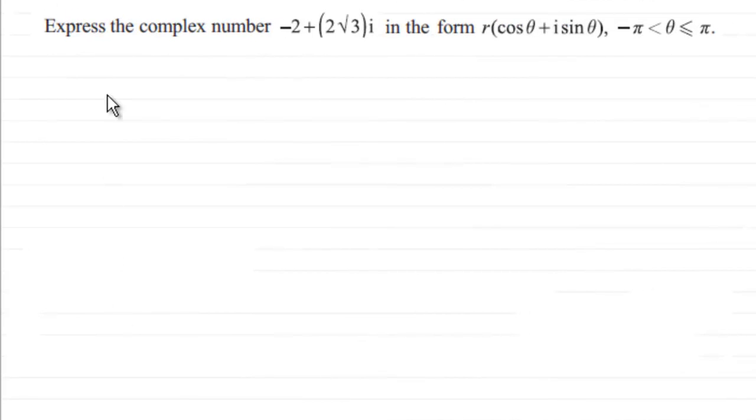Hi, now in this question we're asked to express the complex number -2 + 2√3i in the form r(cosθ + isinθ) where theta is measured in radians and is greater than -π and less than or equal to π. So if this is a question you'd like to have a go at, I'll give you a moment to pause the video, come back when ready, and you can check your work solution with mine.